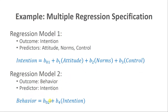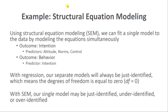So that's what we'd do with the step-by-step multiple linear regression approach — testing these two equations separately. With path analysis, however, we can test this all simultaneously within a structural equation modeling framework, commonly abbreviated as SEM. Using the SEM approach, we can fit a single model to the data by modeling those equations simultaneously, which also allows us to assess overall model fit. With the multiple linear regression approach, we can only assess fit for each model in isolation.